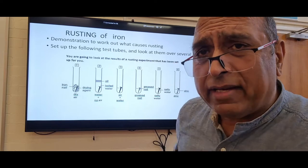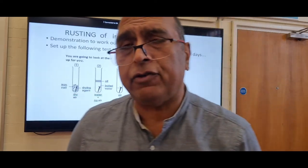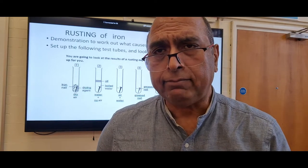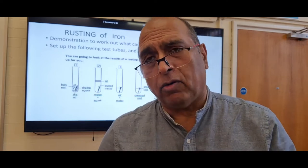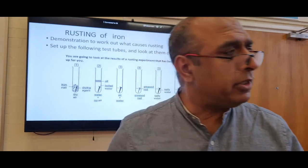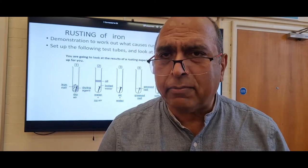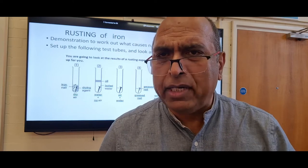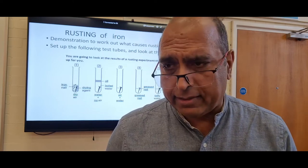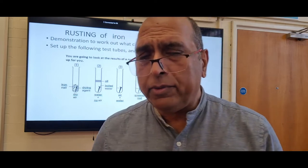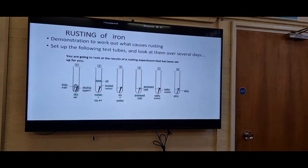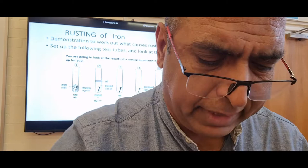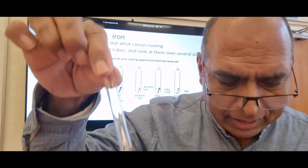One big disadvantage of iron — in things like clamp stands or iron gates — is that it rusts. Rusting is a big problem and you need to know basic ways that rusting can be prevented. Experiments can be set up with iron nails in different conditions to investigate this.